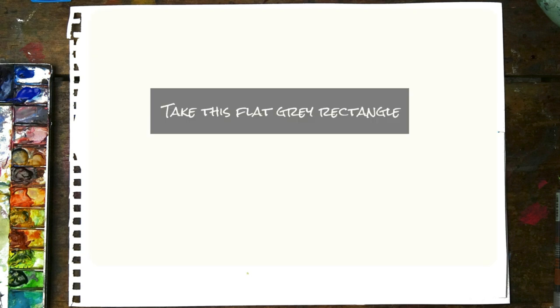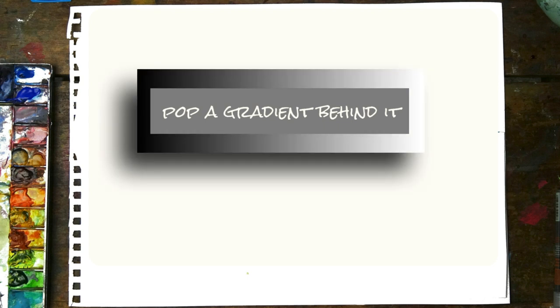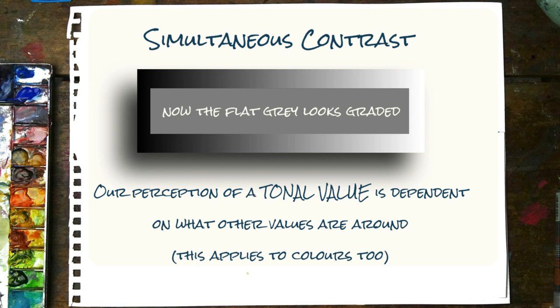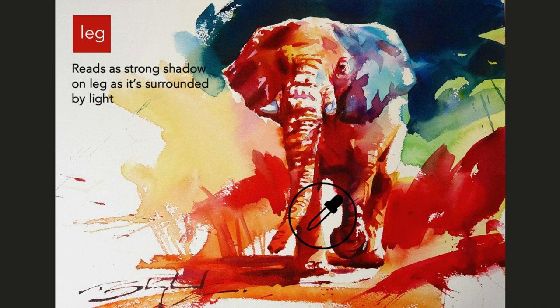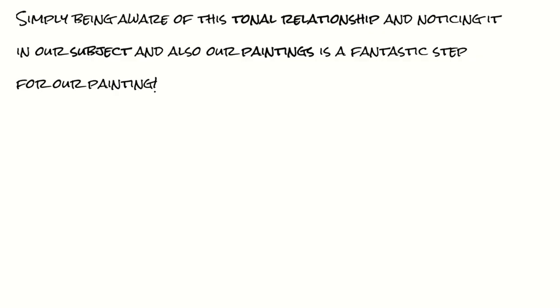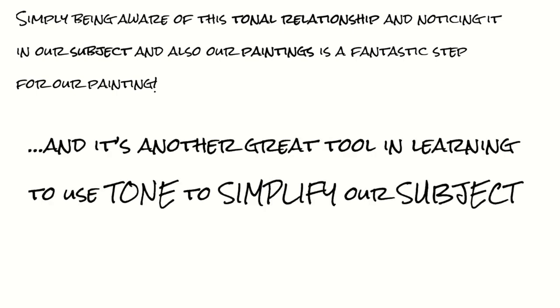And there are all sorts of wonderful optical illusions that revolve around this. This phenomenon is known as simultaneous contrast, and it applies to colour too. Basically, our perception of a tonal value is completely dependent on what other tonal values are around it. There are loads of other examples on the net if you want to check them out. But the useful bottom line is that if you take a colour and put it in one area, it may read as a darker tone. Take that exact same colour and put it in a different, darker area and it will read as a lighter tone. Simply being aware of this and starting to notice it — not only in your subject but also in your own work — will do only good for your painting, and it's another great tool in learning to use tone to simplify your subject.